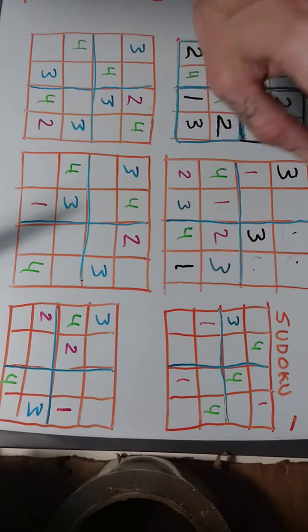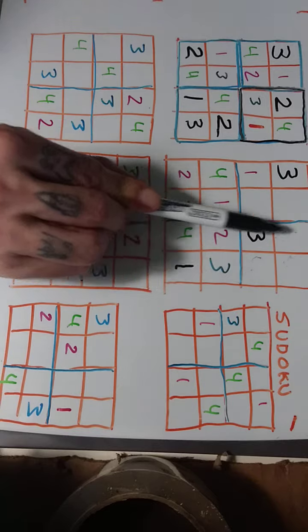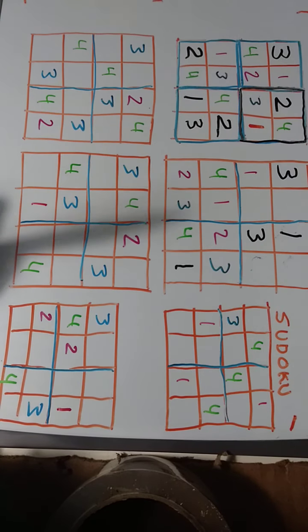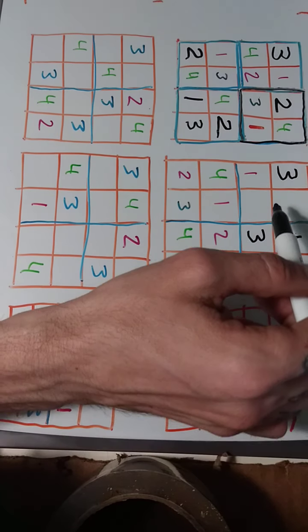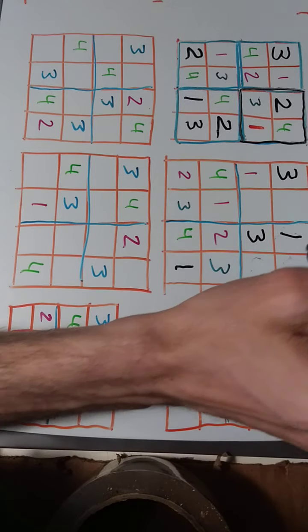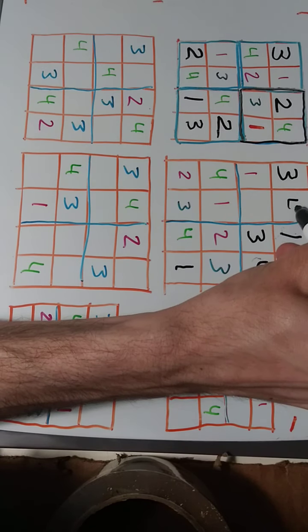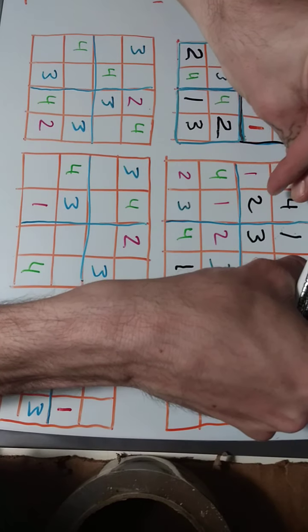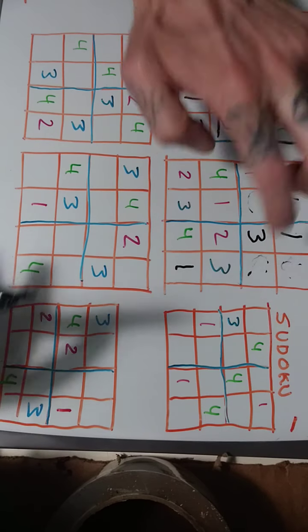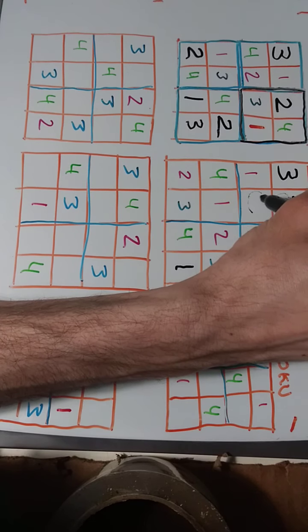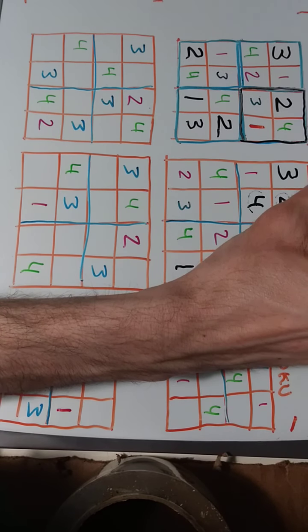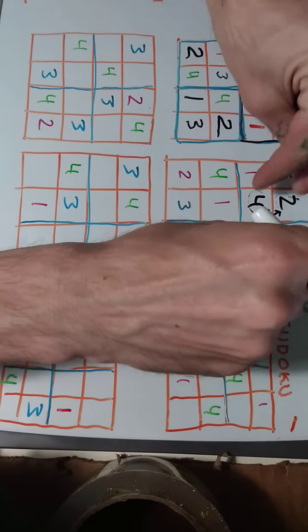We know we must put the three right there, and then we can continue. Now we're left with this column and we know we're missing a one, so we'll put that there. Here we know we need a two and a four in two spots, and a two and a four in two other spots. We get to pick the order — two, four, four, two. You could have also switched those and put four, two, two, four. Either arrangement is correct, but only those two arrangements work in this puzzle.